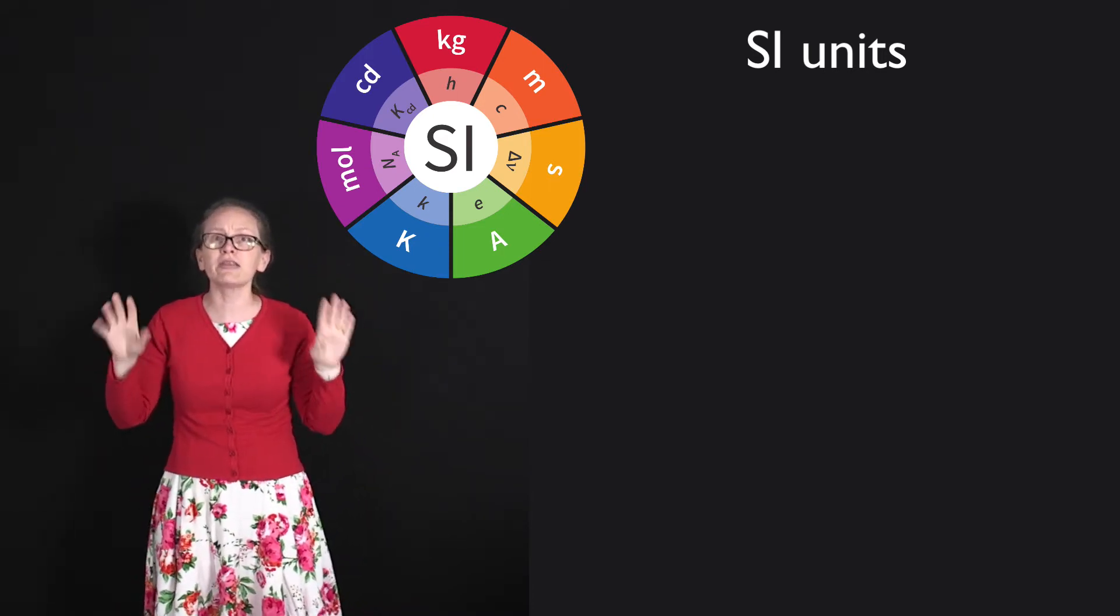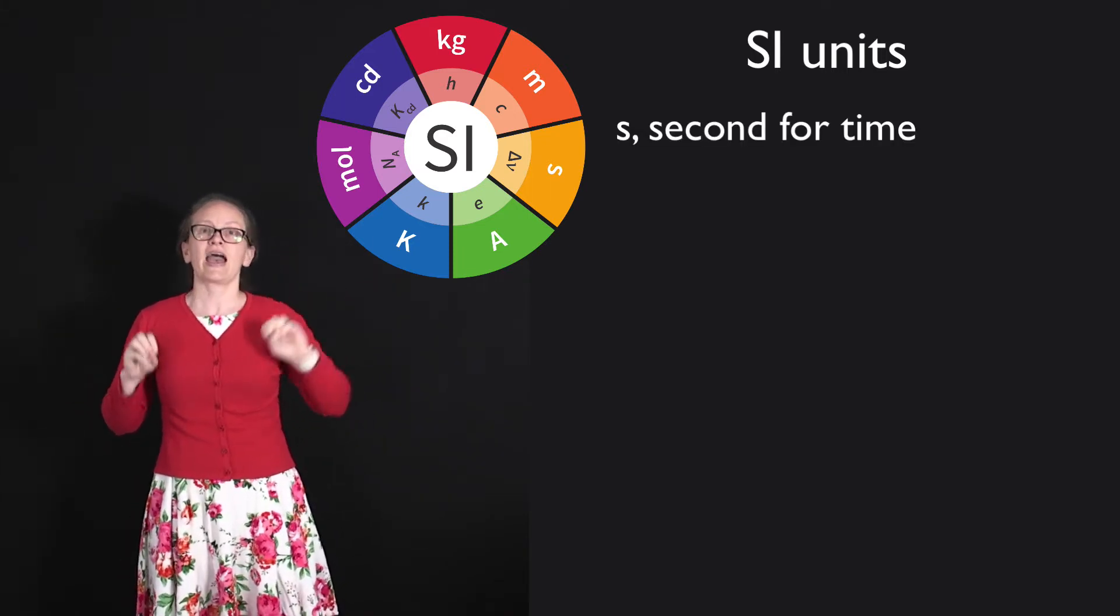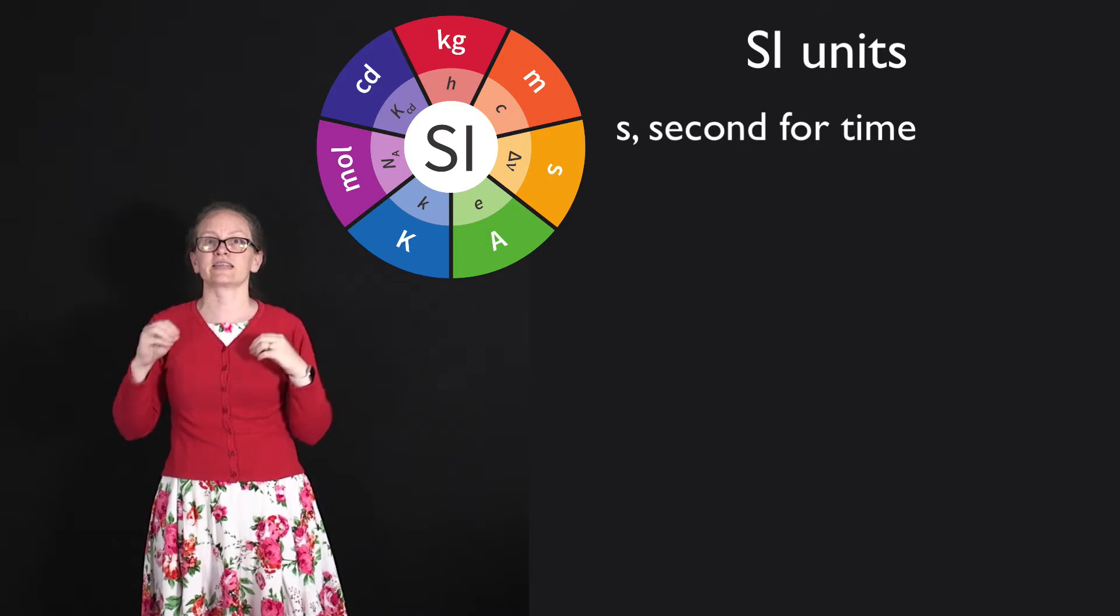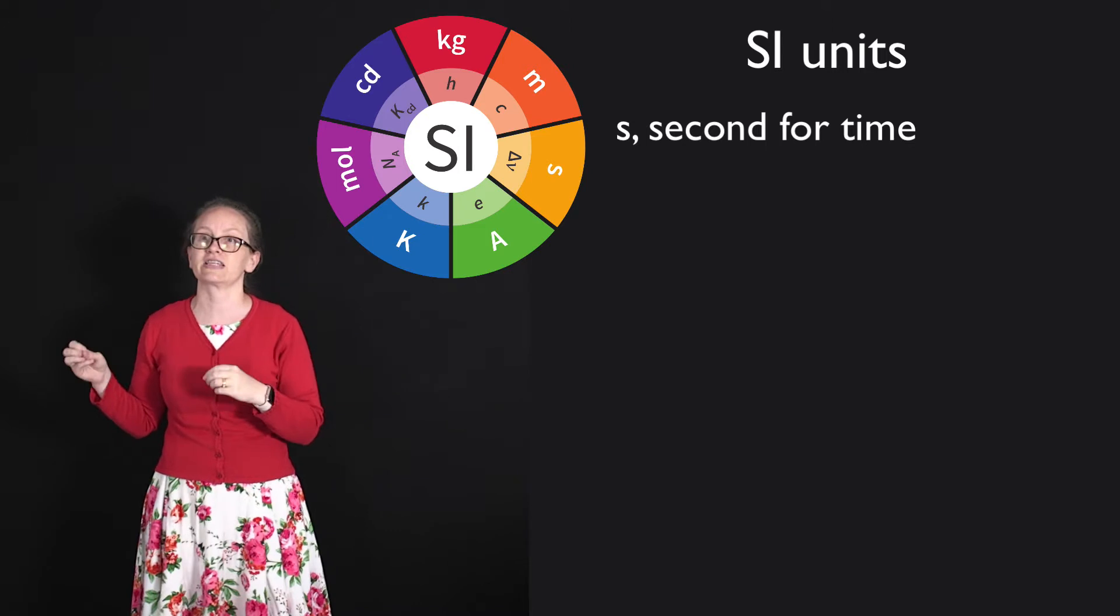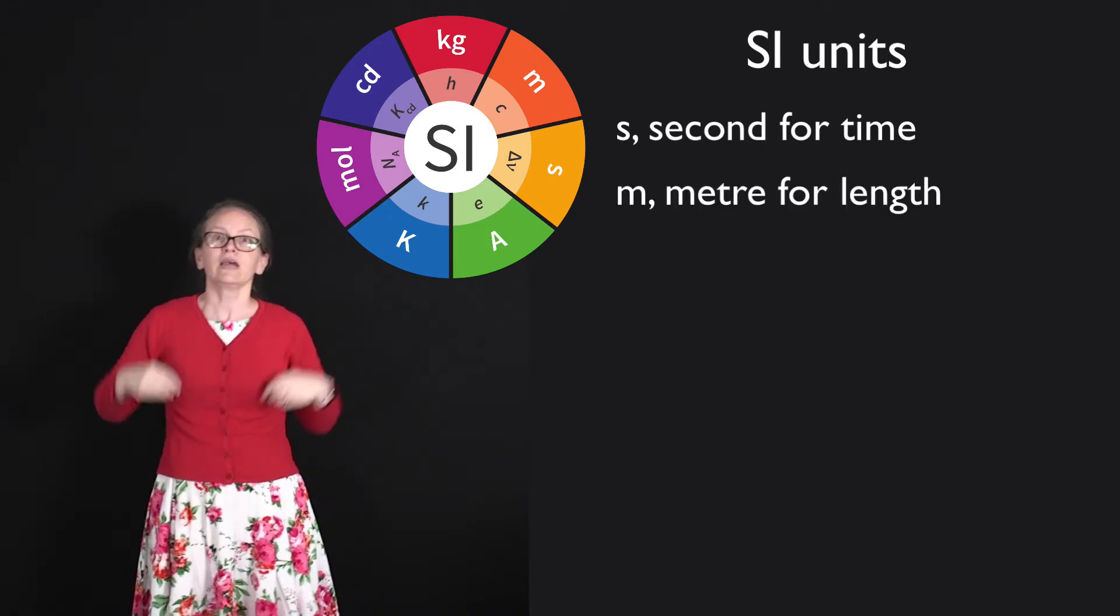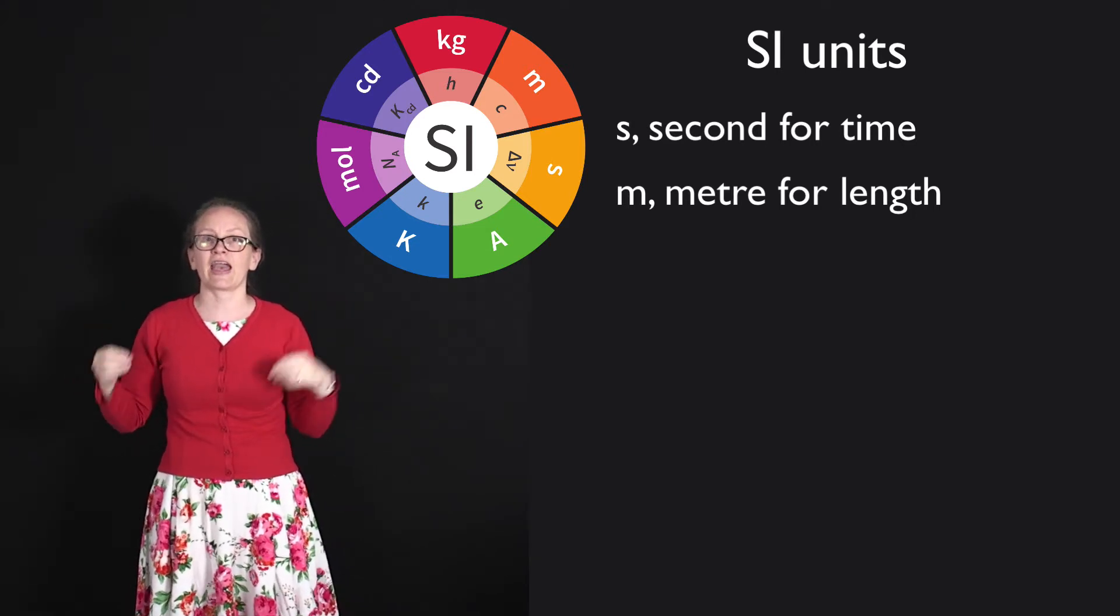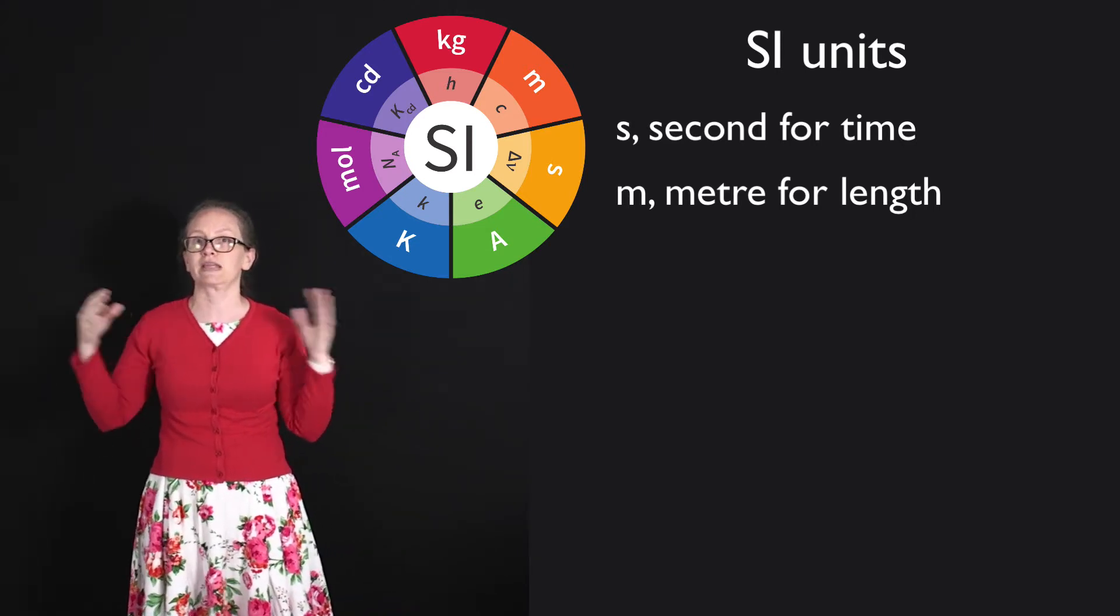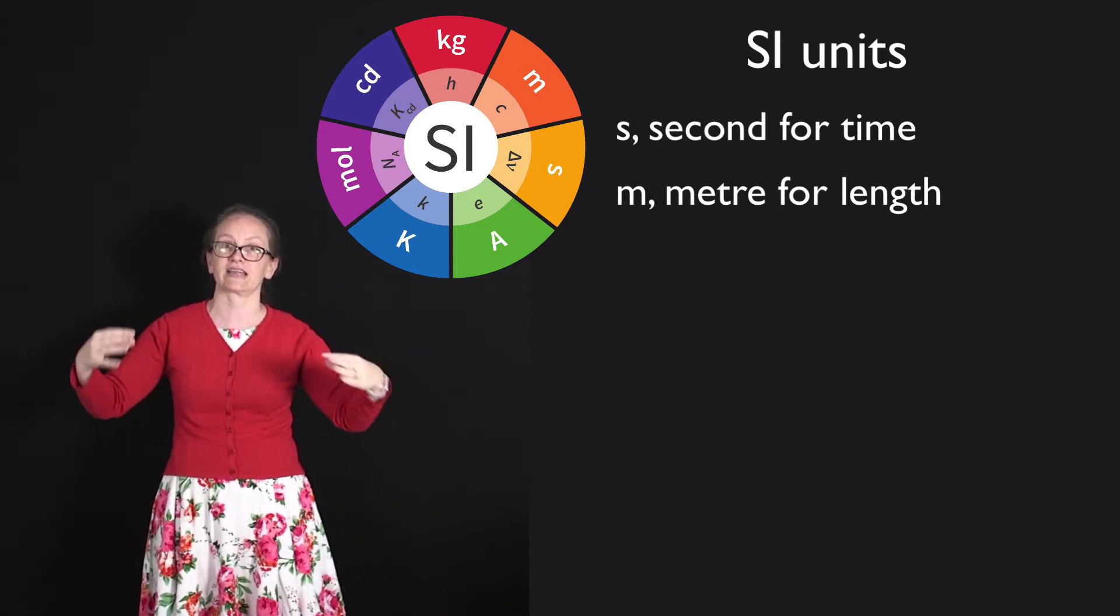The seven base units that we use are the seconds, and the second is defined from the frequency of one of the hyperfine transitions in the cesium-133 atom. We've also got meters, which is the unit for length, and it comes from the speed of light. So to get a length from the speed of light, we also need to use the seconds.